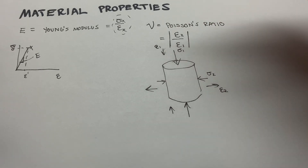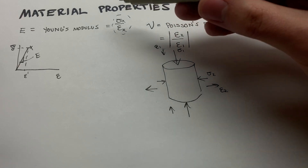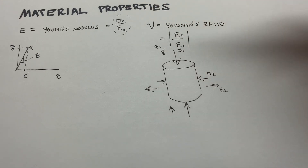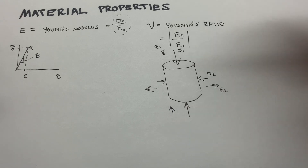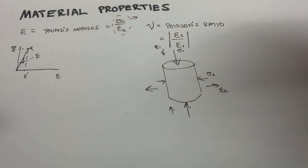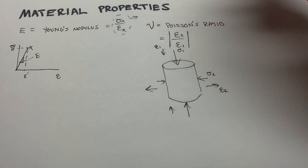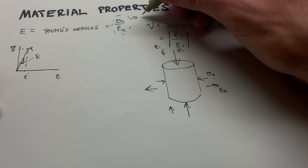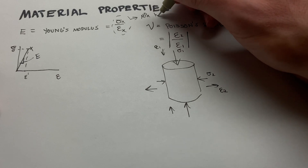Looking over at Young's modulus: if we think of it as a stress value over a strain value, strain is itself dimensionless — it's meters per meter, feet per feet. So the units of Young's modulus become identical to units of stress, which are units of pressure — force per unit area. For rock purposes, we're probably going to be looking at MPa or KSI.